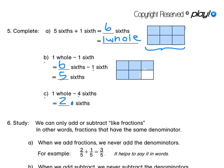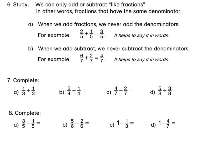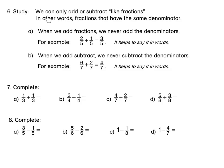Let's move on to number 6. We have seen that we can only add or subtract like fractions — in other words, fractions that have the same denominator. When we add fractions, we never add the denominators. For example, it helps to say this in words: 2 fifths plus 1 fifth equals 3 fifths. Do you see the denominators all stay the same?